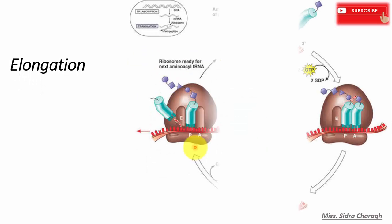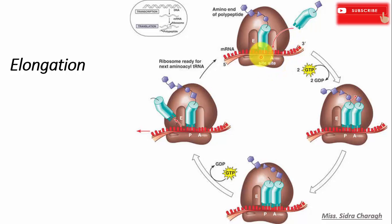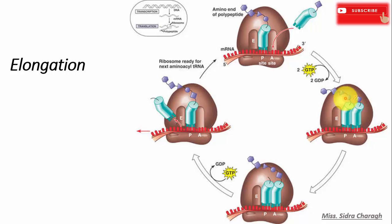The second step in protein synthesis is elongation, or translocation. While the first transfer RNA is still attached, a second transfer RNA molecule attaches to the messenger RNA at the A site on the ribosome, carrying an amino acid. The amino acid at the P site binds to the amino acid carried by the second transfer RNA at the A site, and these two amino acids are joined together through a condensation reaction that creates a peptide bond.